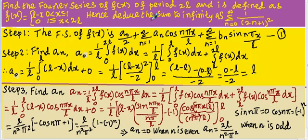Here, deduce the sum to infinity: sigma n equals 0 to infinity of 1 divided by (2n+1)².